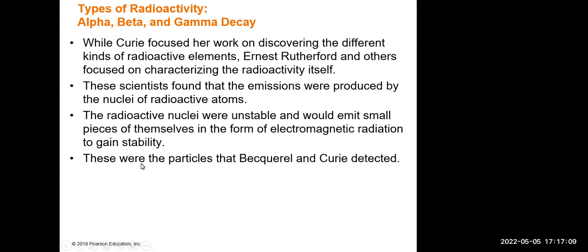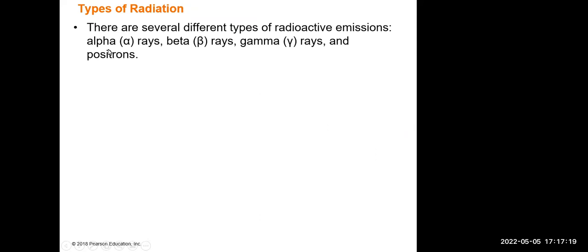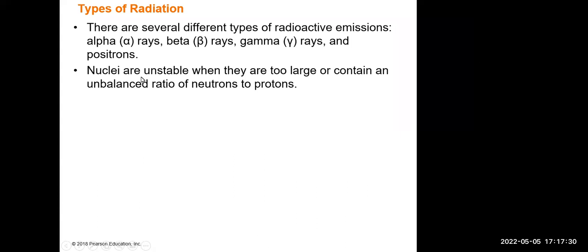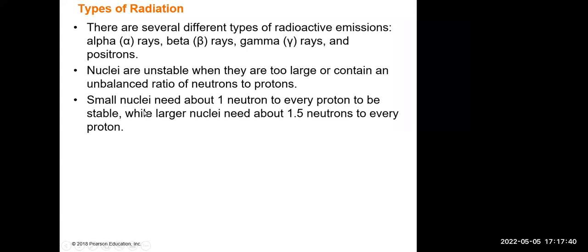In this chapter we are going to study alpha rays, beta rays, gamma rays, and positrons. Nuclei are unstable when they are too large or contain an unbalanced ratio of neutrons to protons. Smaller nuclei need about one neutron to every one proton to be stable, while larger nuclei need about 1.5 neutrons to every proton.